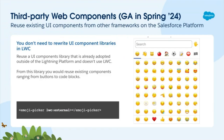Let's say you have a collection of UI components not based in the LWC framework that you want to use in your Salesforce application, like this emoji picker library. You can use this third-party web component by either uploading it as a static resource, then loading it using the loadScript method from the platform resource loader module and adding the custom element to your template using the LWC external directive — or by adding the third-party web component as an LWC module with the JS meta XML config file. We are excited to bring this to general availability in Spring 24.